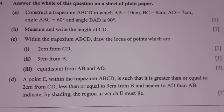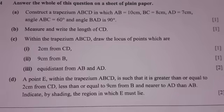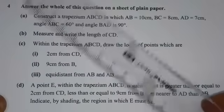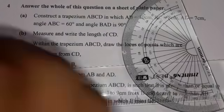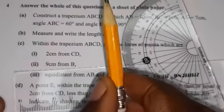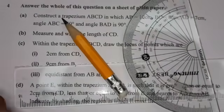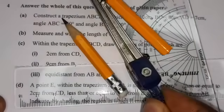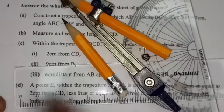In this video, we're going to look at the 2023 Mathematics Paper 2, Question 4 for Internal Candidates. This question was based on construction. To answer this question, you're going to require a ruler, a protractor, a sharp pencil, an eraser, and a compass.